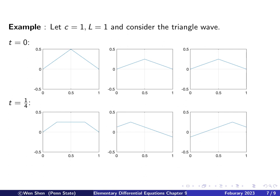Let's take an example using c equals 1 and l equals 1. At t equals 0, the deflection f is a triangular wave: from 0 to 1 it goes up with slope 1, then comes down with slope negative 1. The f* component that will go to the left and the component that will go to the right are each just half of that initial shape.